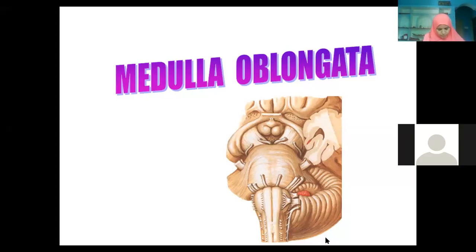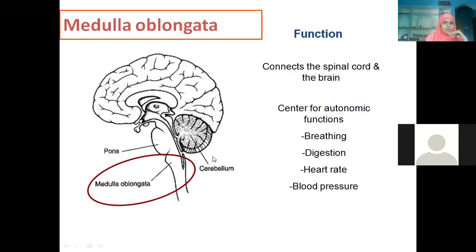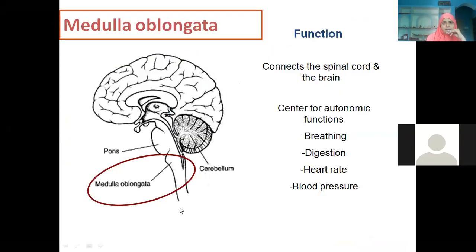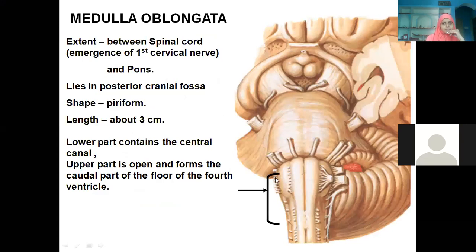This aspect, whatever we are seeing, is a ventral aspect, and the one which is behind is the dorsal aspect. The medulla oblongata is connecting the spinal cord and contains very important centers which are controlling the mechanism of breathing. It extends between the spinal cord and the pons.